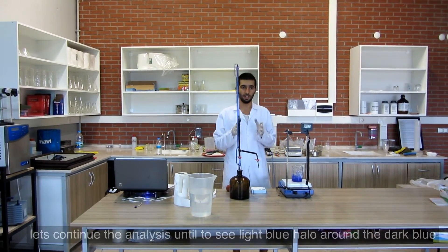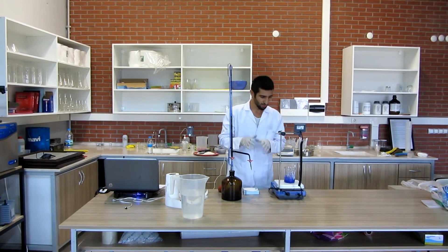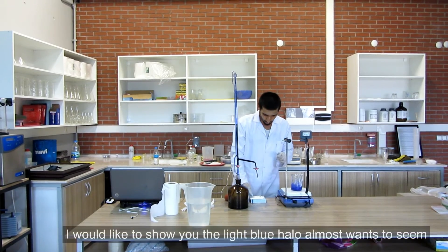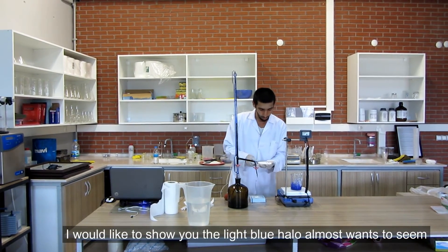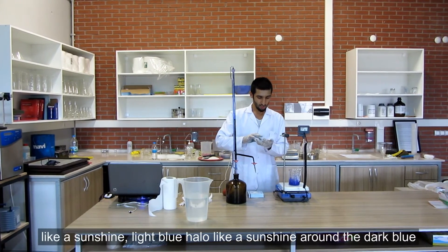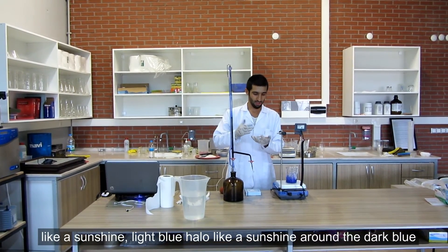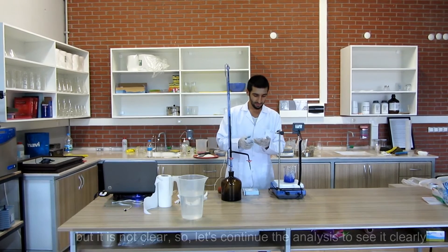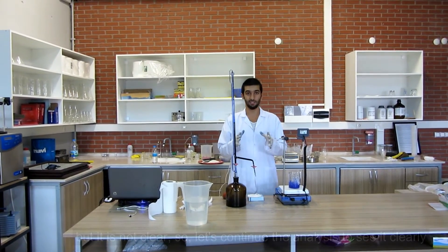Unfortunately there isn't any light blue halo around the dark blue so let's continue the analysis until to see light blue halo around the dark blue, same procedure. I would like to show you the light blue halo almost won't seem, like a sunshine light blue halo like a sunshine around the dark blue but it's not clear so let's continue the analysis to see it clearly.